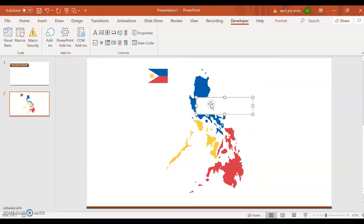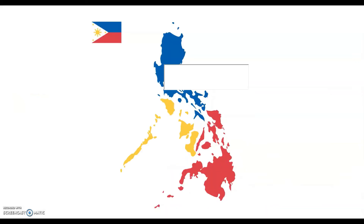Notice that you cannot actually type here in normal view. But if you go to the Slideshow presentation, when you click on that text box, now you can type — say, Luzon. By doing this, you're asking your audience to participate in the discussion.